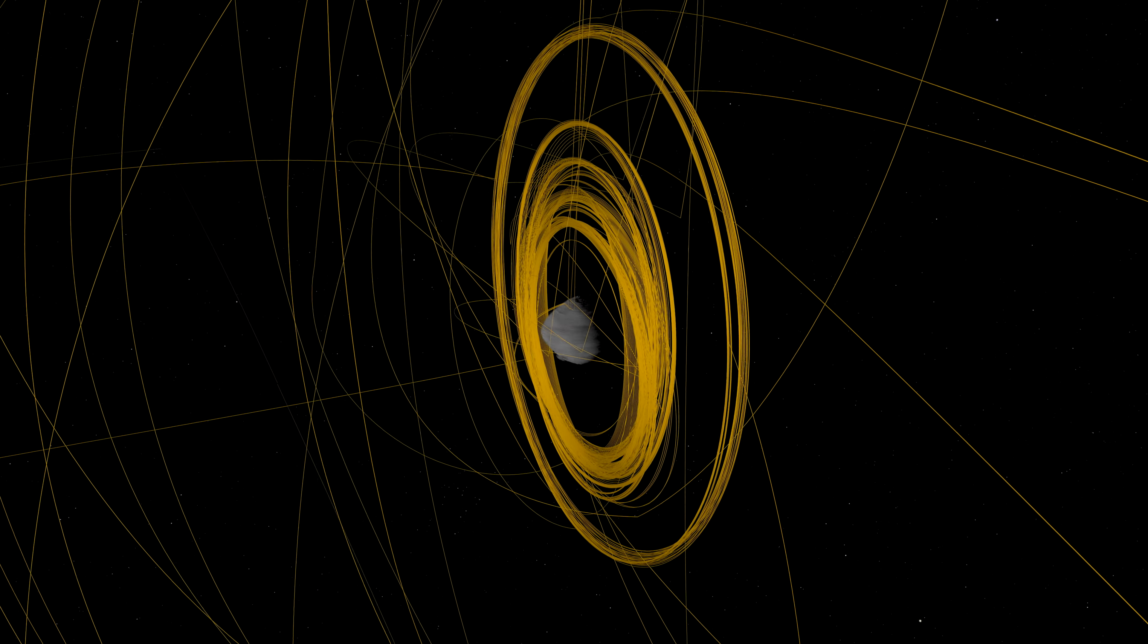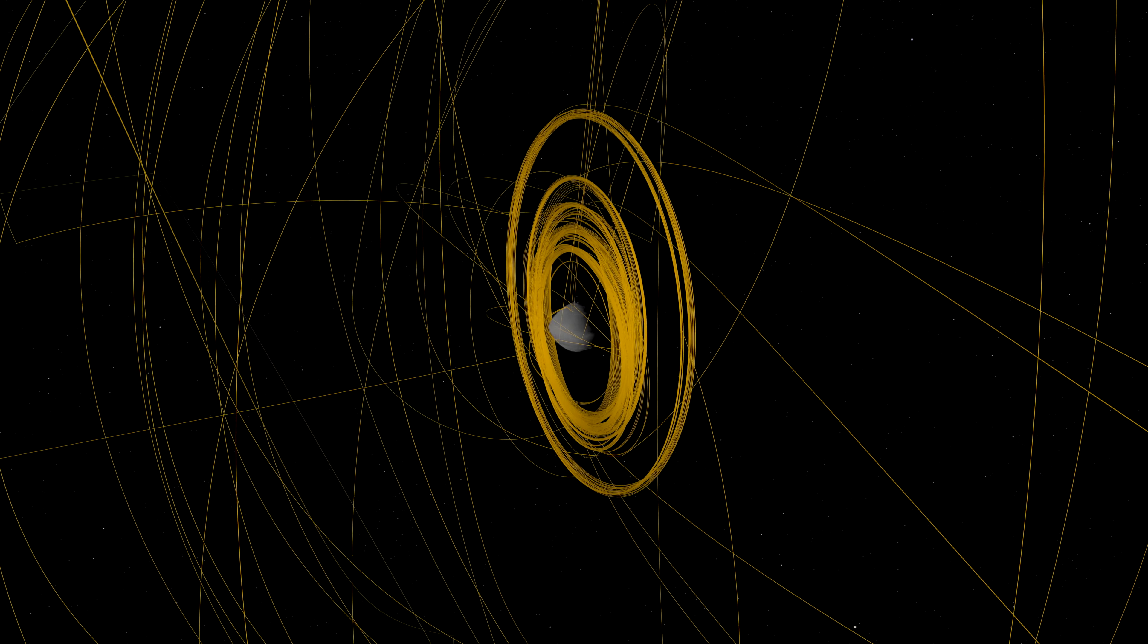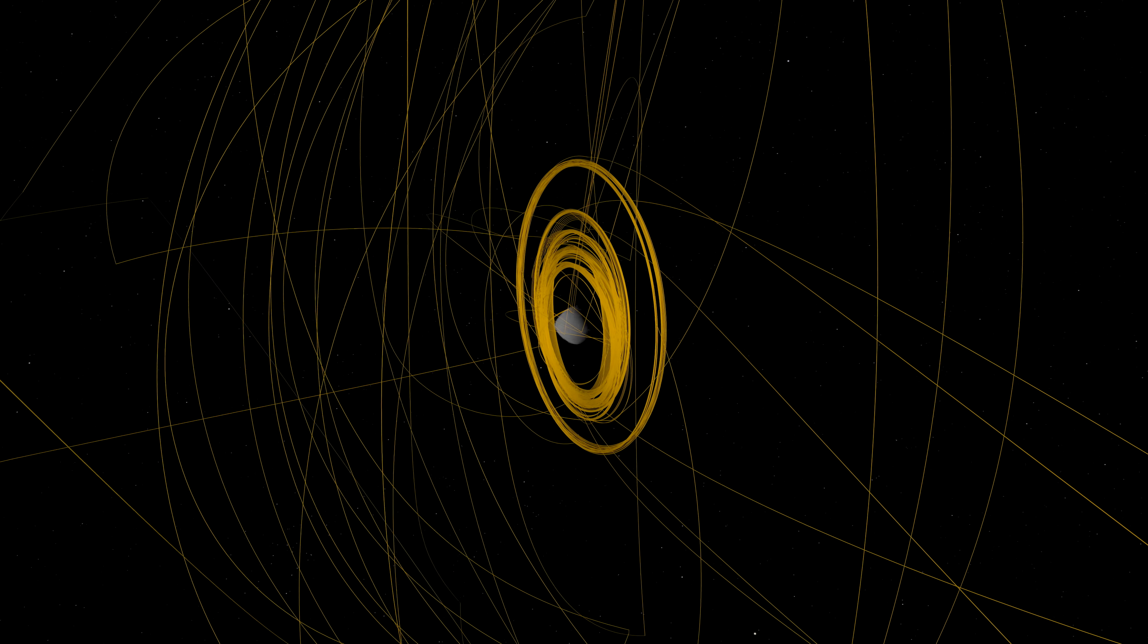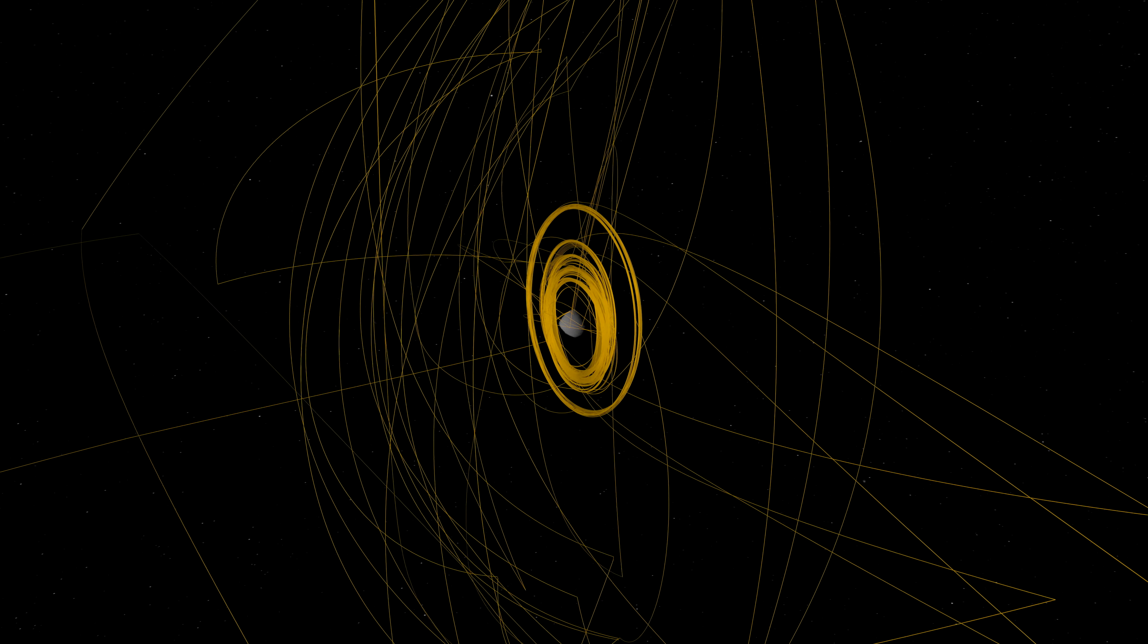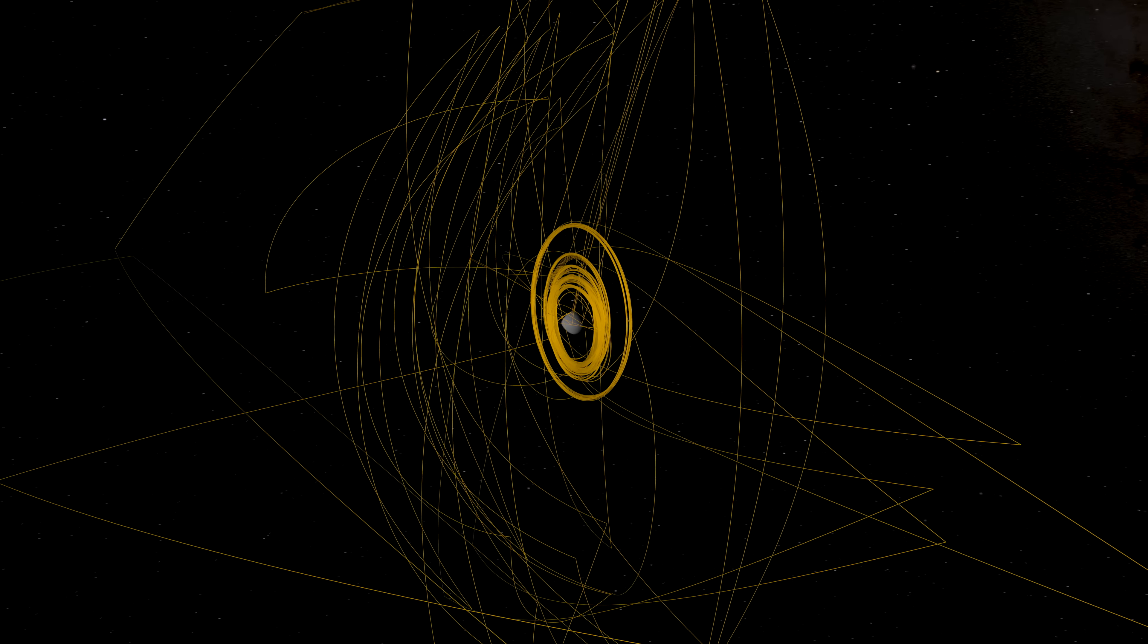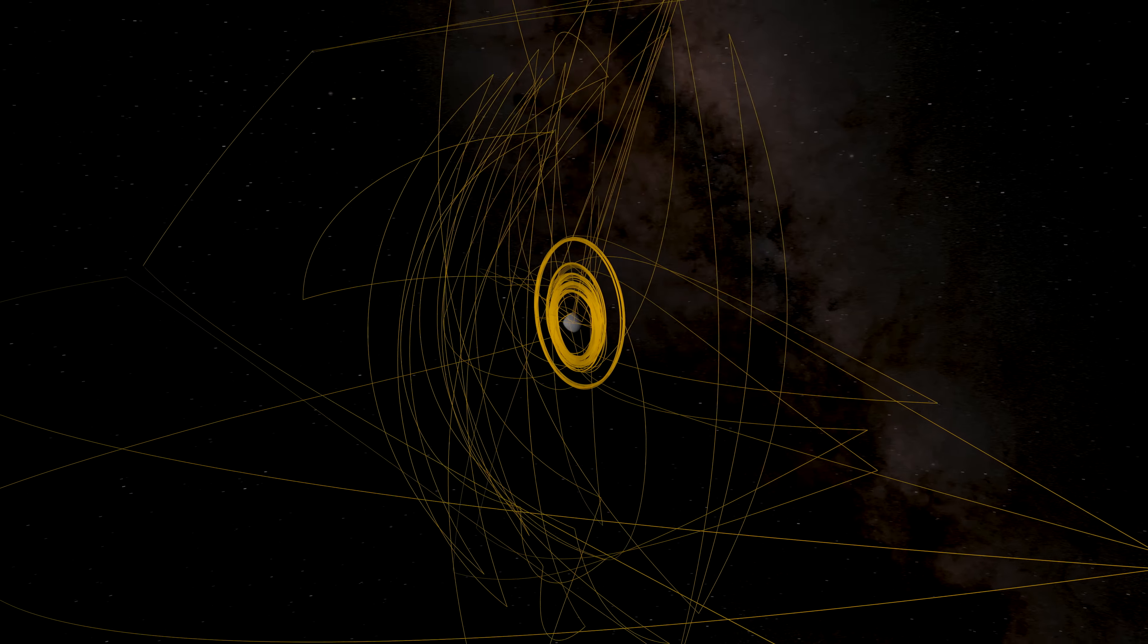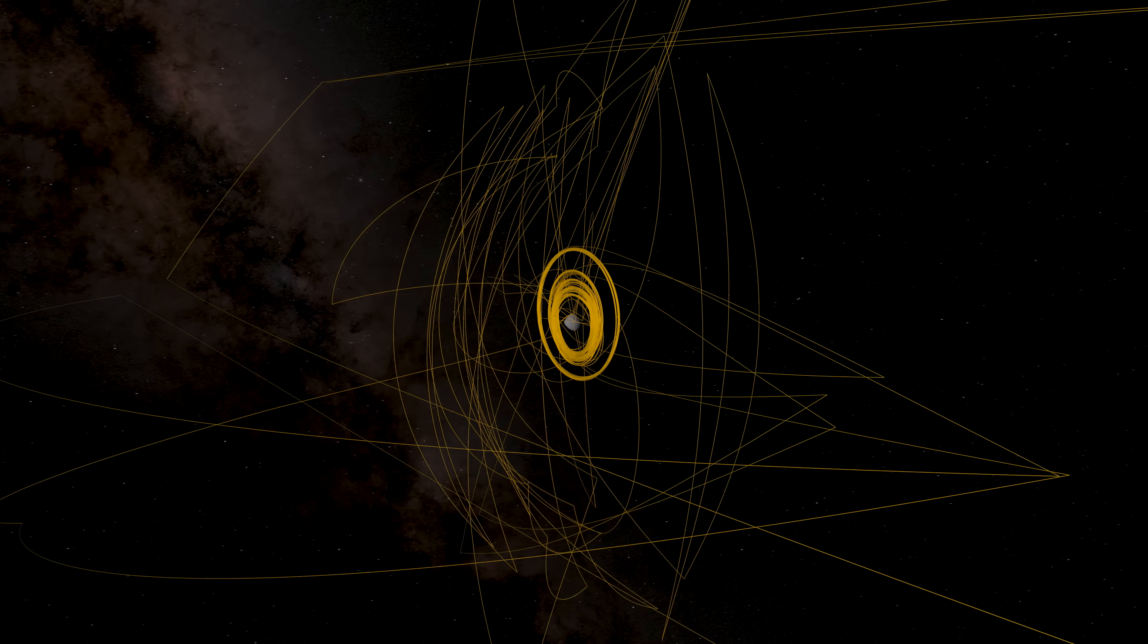Following TAG, the spacecraft drifted to a safe distance away from Bennu. By the end of October, mission controllers determined that it had exceeded its goal of collecting 60 grams of asteroid material. They directed it to stow the sample in preparation for return to Earth.